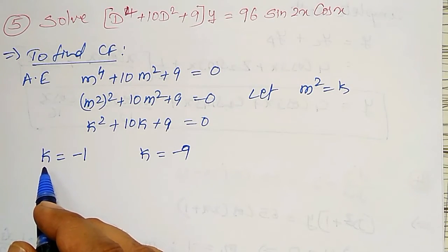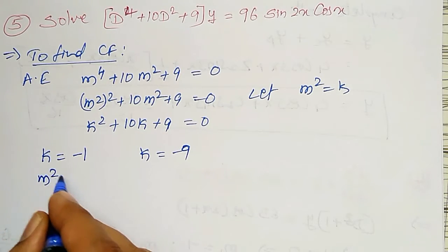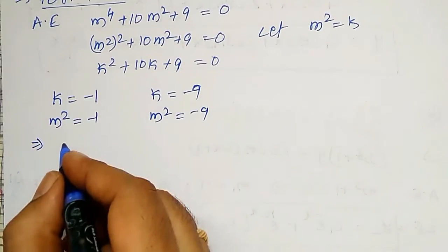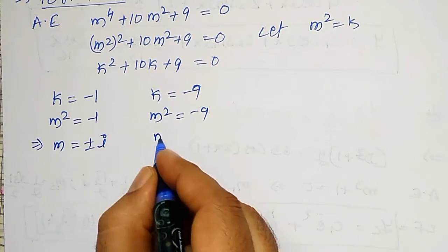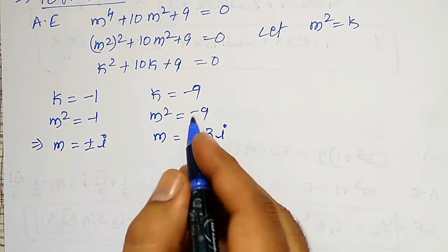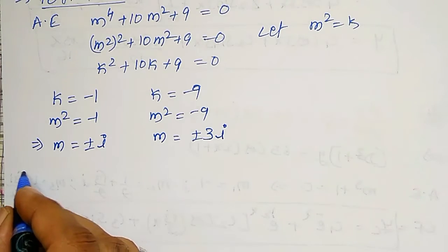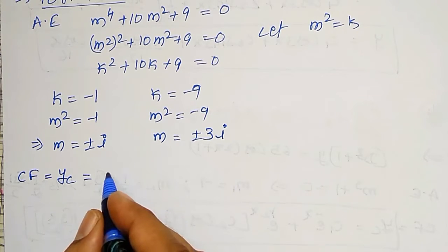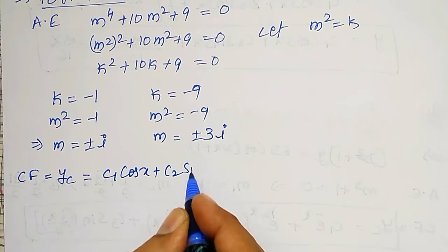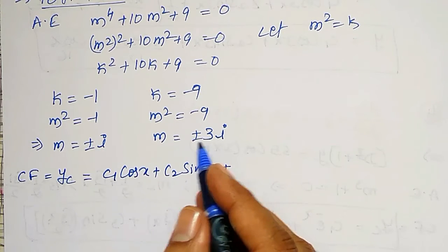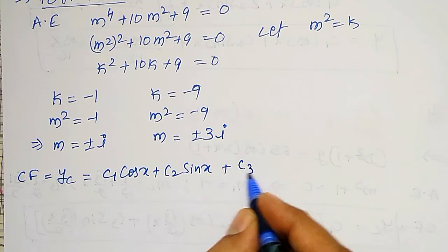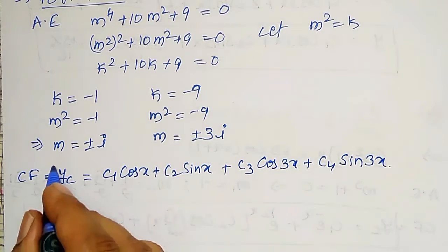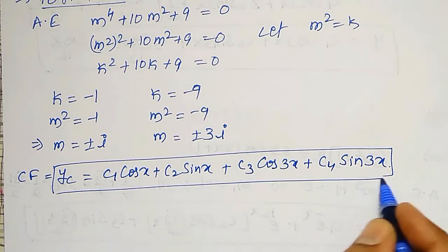Since k equals m squared: m squared equal to minus 1 gives m equal to plus or minus i, and m squared equal to minus 9 gives m equal to plus or minus 3i. Therefore, the complementary function yc equals c1 cos x plus c2 sin x plus c3 cos 3x plus c4 sin 3x, since no real parts are present in either root.